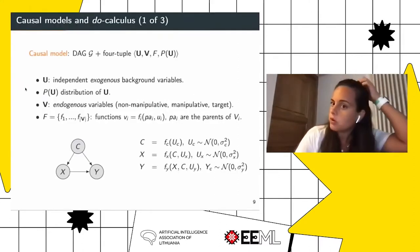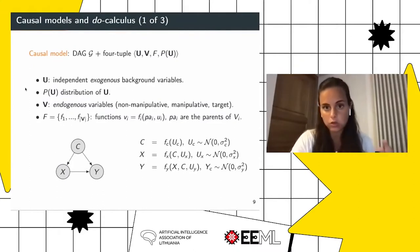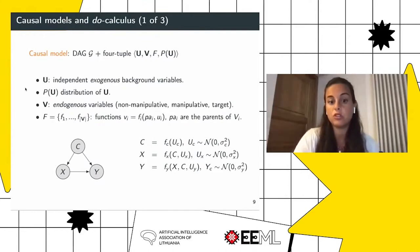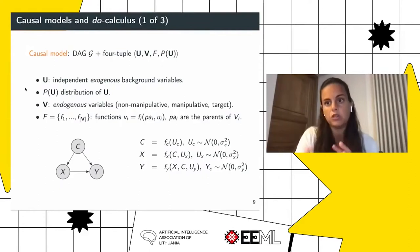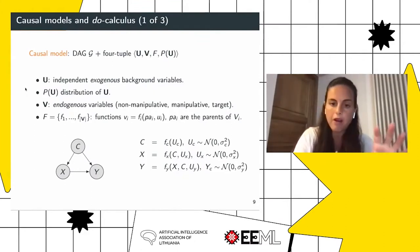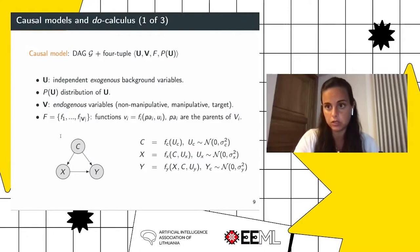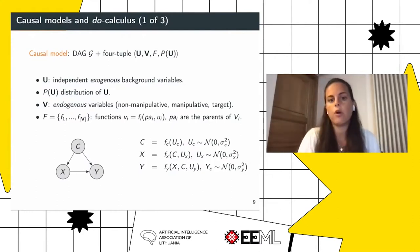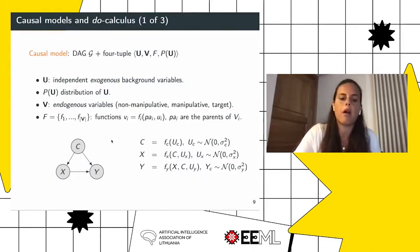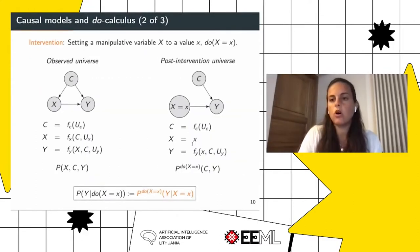We will consider a causal model represented by a DAG and a four-tuple. In the four-tuple, we have exogenous variables associated with a specific distribution, endogenous variables — distinguished between a target variable we wish to optimize, manipulative variables we can intervene on, and non-manipulative variables we cannot intervene on — and a set of functions mapping each parent and the exogenous variable to the node. For instance, in the classic X, Y, C graph with an observed confounder, we have a causal graph on the left and the associated structural equation model on the right, where functions map exogenous variables and parents to each variable.